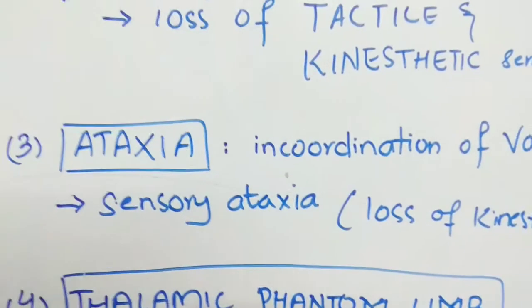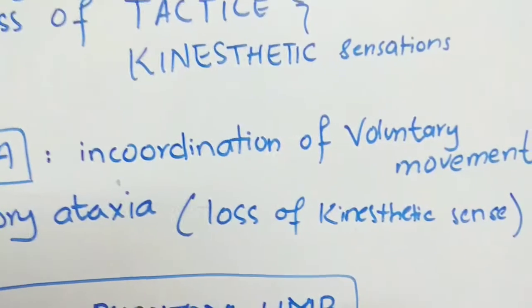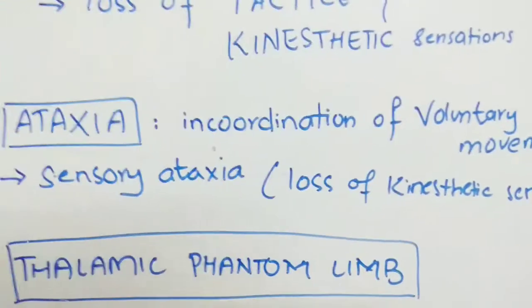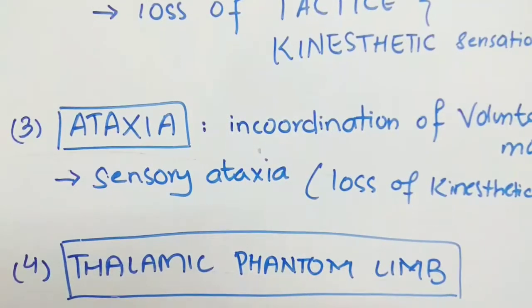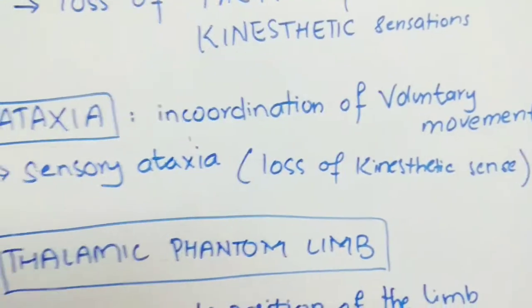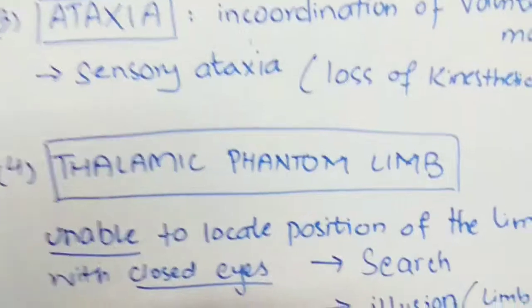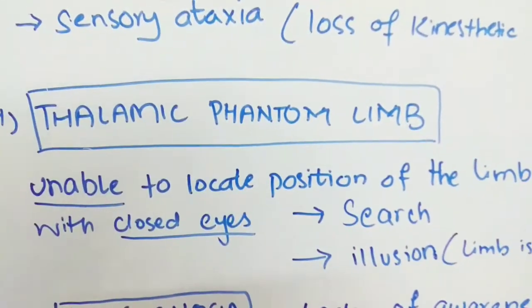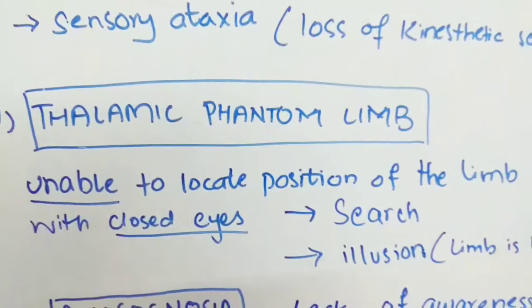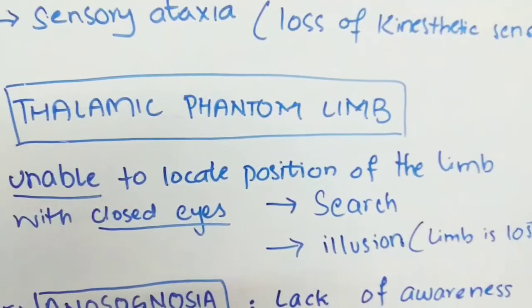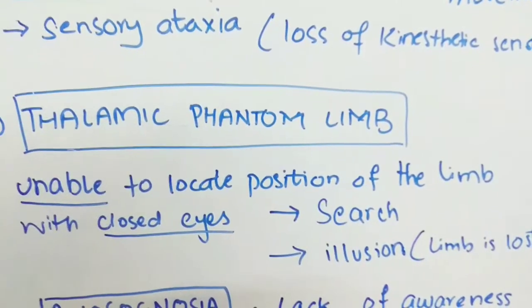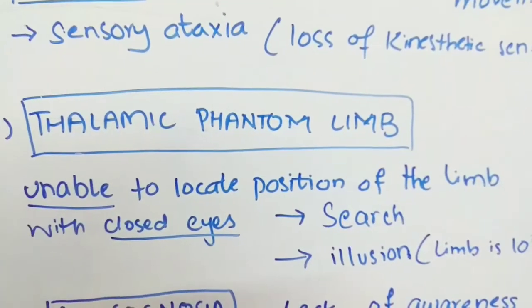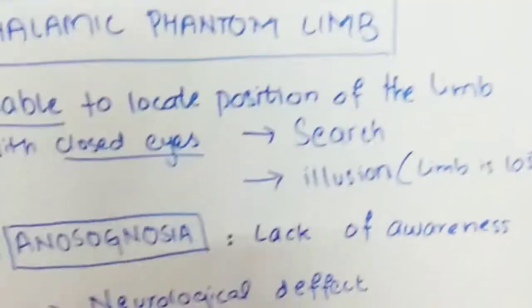The next symptom is ataxia, which is incoordination of voluntary movements. In thalamic syndrome, sensory ataxia is most common as there is loss of kinesthetic sense. Then there is thalamic phantom limb — in this sign, the patient is unable to locate the position of the limb with eyes closed. He will search for it in the air or have the illusion that the limb is lost.